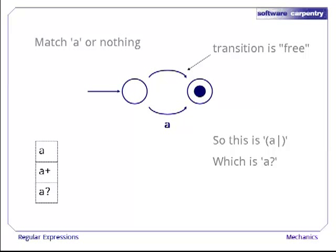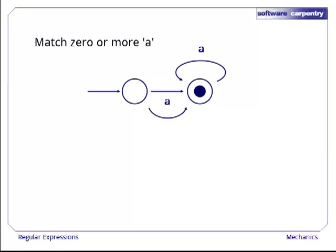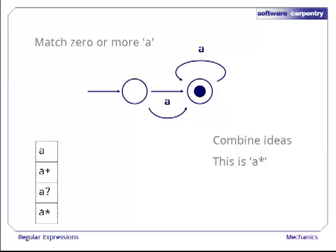So now we have three patterns in our library. This regular expression looks like the one that matches one or more a's, except there's an extra arc to get us from the first state to the second without consuming any input. So this will match a star, i.e. nothing at all, taking that free transition from the first state to the second, or one or more a's. As you can see, we're building up a library of more and more complex patterns.